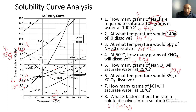Number six: at what temperature would 35 grams of KClO₃ dissolve? We find our 35 grams and locate KClO₃ on the curve. We bring it across until it intersects the KClO₃ line, then bring it straight down — that gives us approximately 75 degrees Celsius.